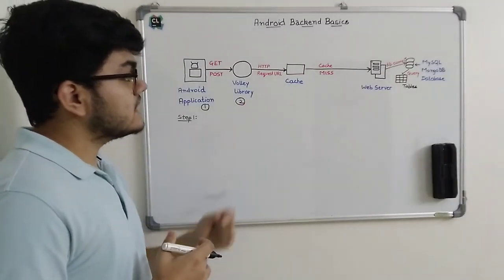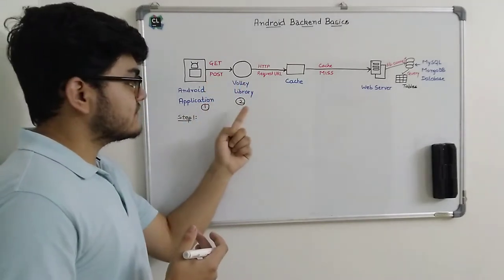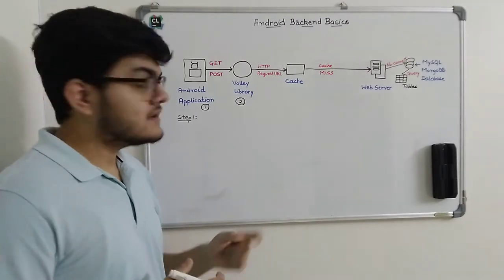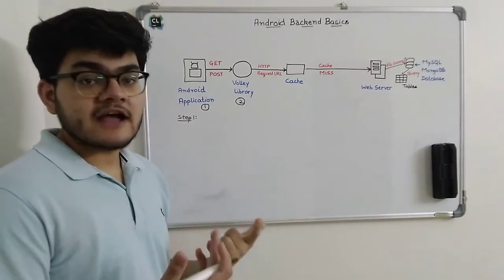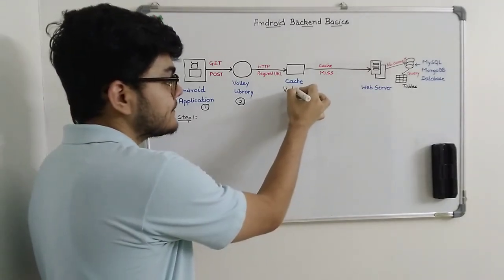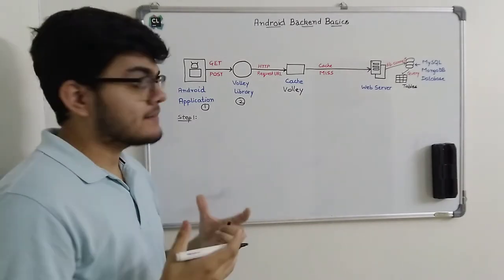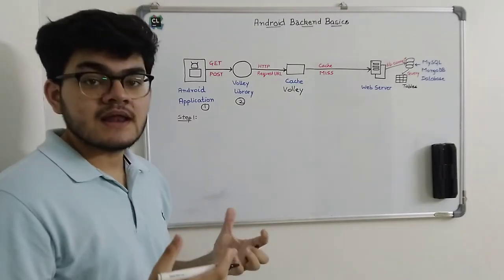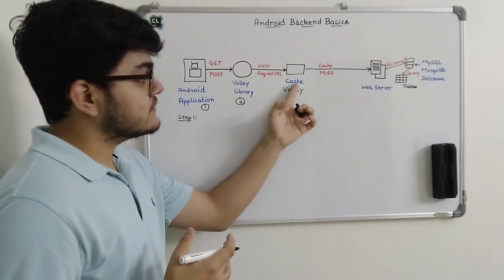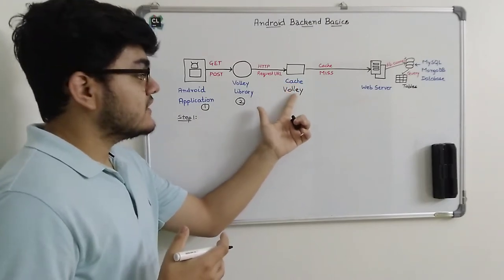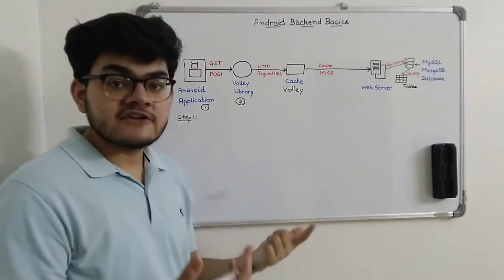The Volley library takes the GET or POST request from the application written in Java and then forwards this HTTP URL to the Volley cache. Volley has its own cache, and first it checks whether the requested URL has been accessed before. If it has been accessed before, it checks from the cache and can give back the response from there. But if the cache is not available, it is a cache miss, and then it asks the web server.